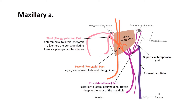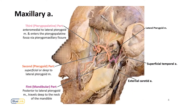The third part enters the pterygopalatine fossa through the pterygomaxillary fissure and is called the pterygopalatine part. We will focus more on the first and second parts.